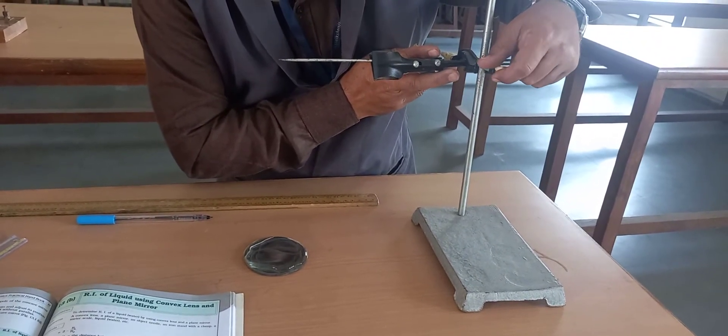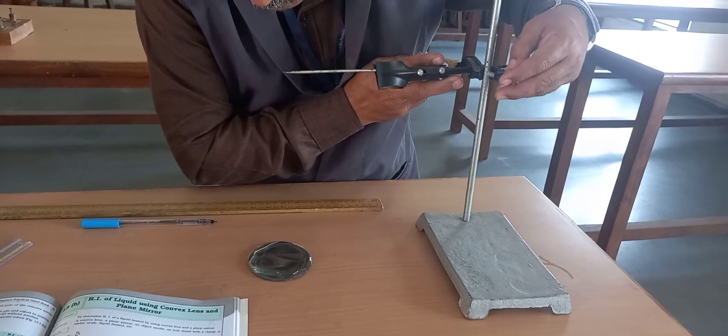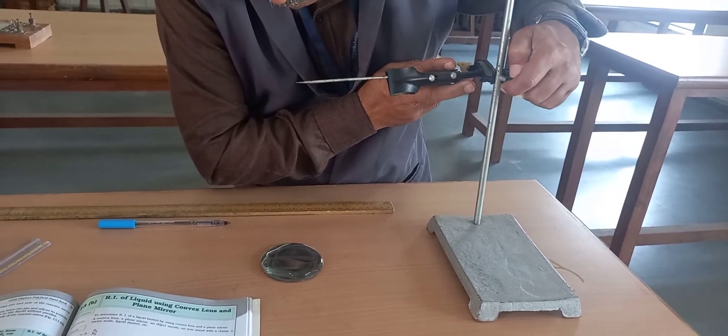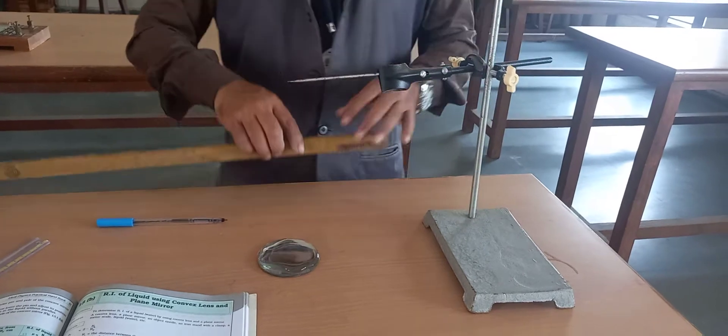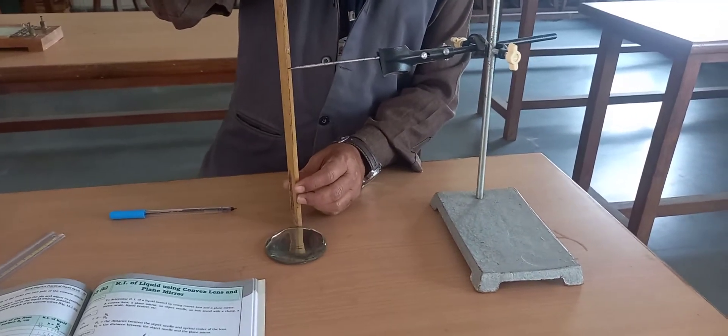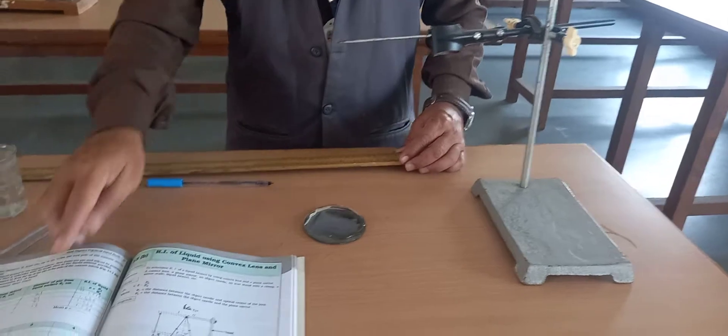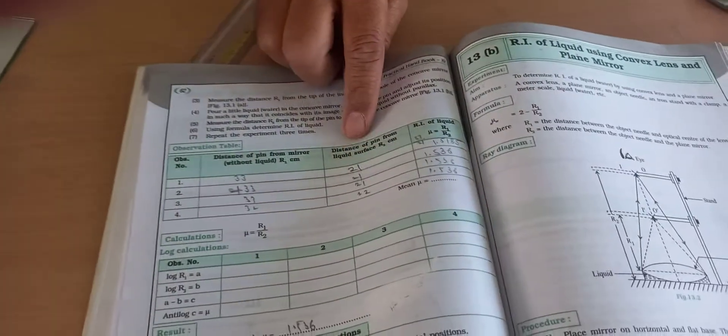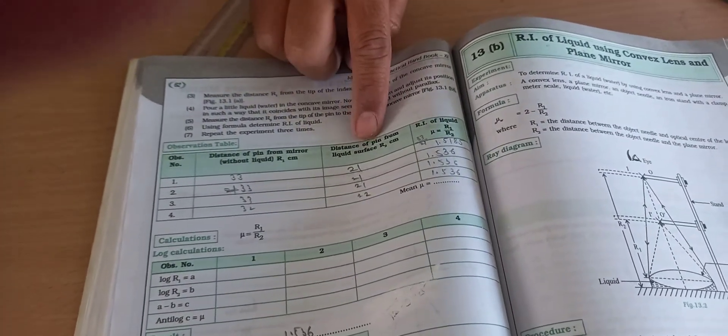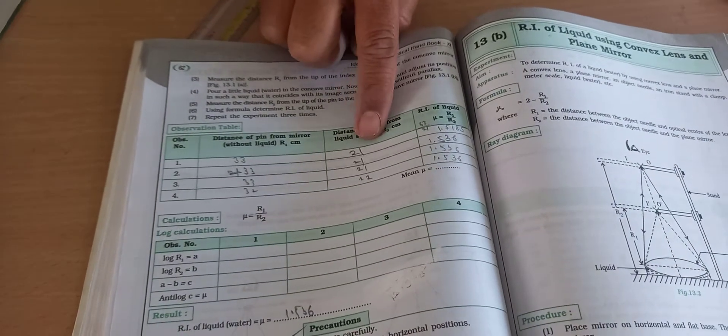At a typical stage, we can see a sharply inverted image. Fix the index pin and record the height. If I measure this, it is around 21 cm. So we got the r2 value with liquid as 21.